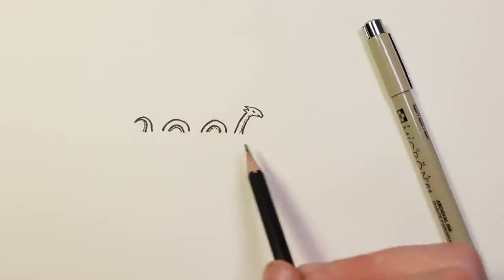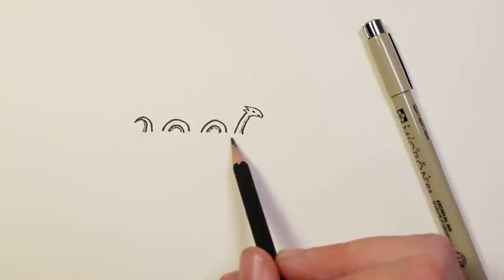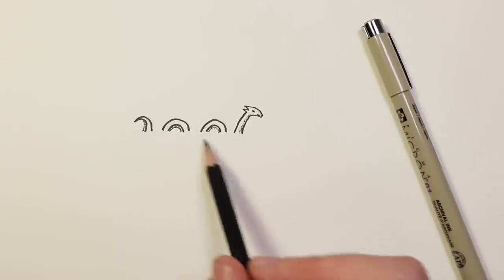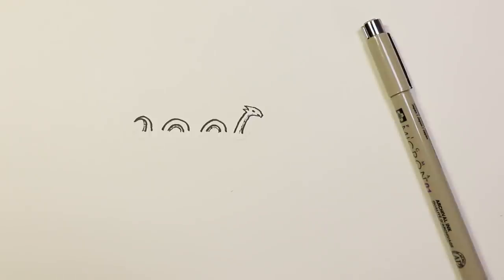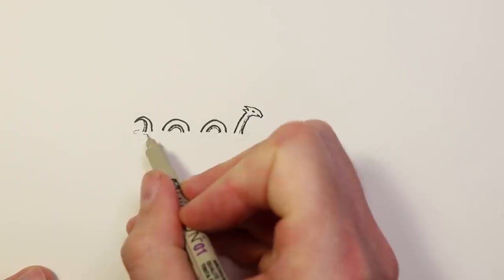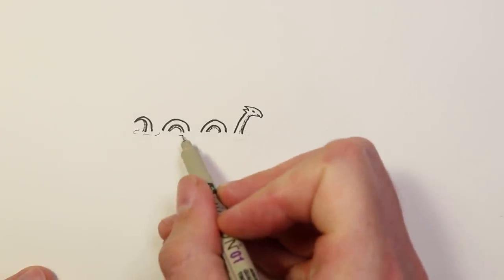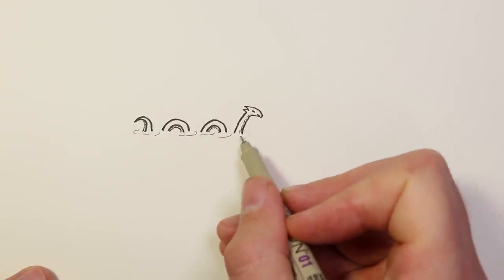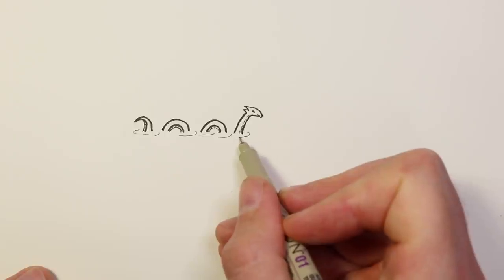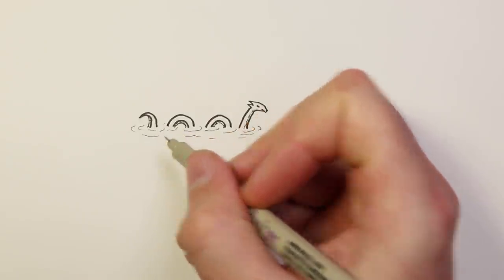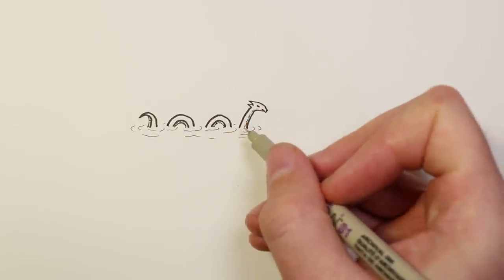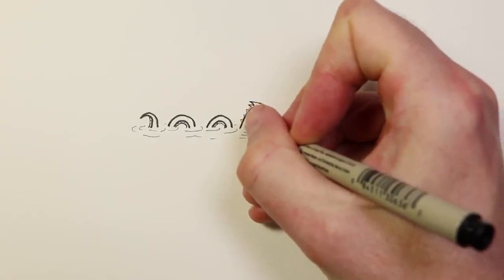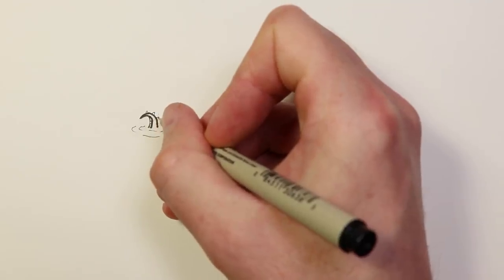The next step is penciling in some wavy lines to give the impression that it is disturbing the water — it makes it feel more at home in the sea of my map. I'm going in with a much thinner pen and scratching in these little wavy lines, somewhat circular, gathered around the parts of the sea serpent sticking out of the water. One last thing I did was add some little back spikes — I just felt like it needed a little something more.